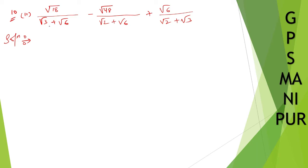What are we going to do? We have roots in the denominator, right? Here and here. So let us try our level best to remove that. How are we going to do it? Root 18 — here there is a plus sign — so you multiply with root 3 minus root 6, the conjugate with the minus sign.